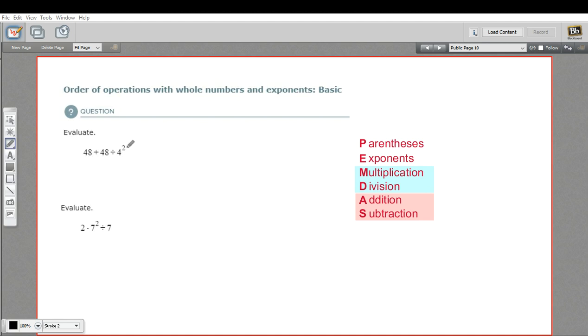So you can see here we have 4 to the second power, or 4 squared. The little 2 here is called the exponent. And here we have 7 squared, so that's an exponent as well.